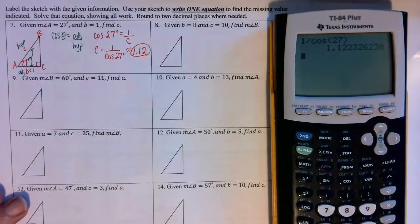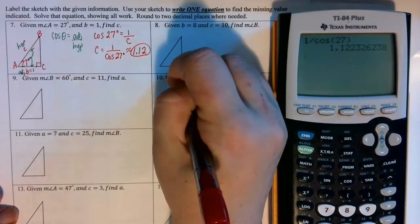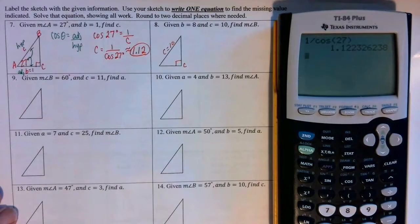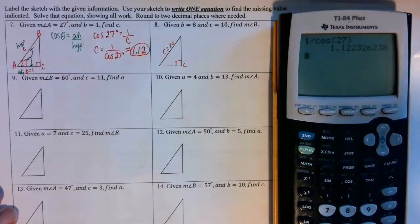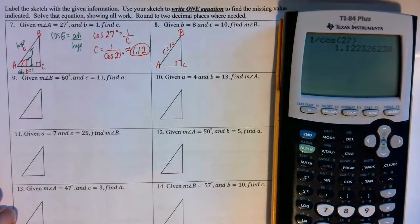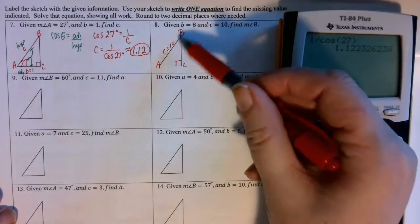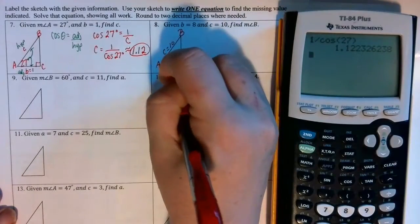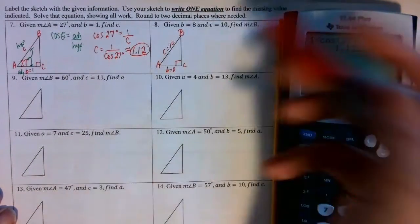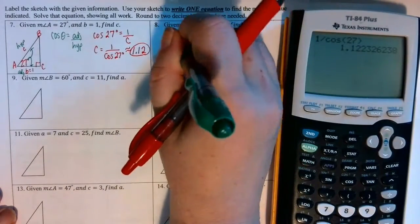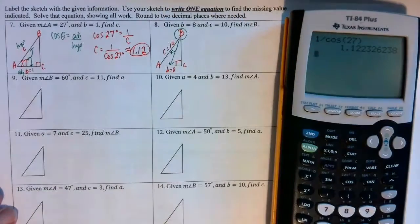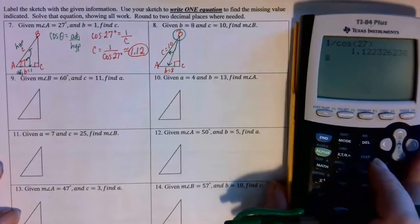In problem eight, the right angle is always angle C, opposite the hypotenuse. Little c is given as 10. We label the other angles A and B. Side b must be opposite angle B, so little b equals 8, and we're looking for the measure of angle B. We know the hypotenuse and the side that is opposite angle B.